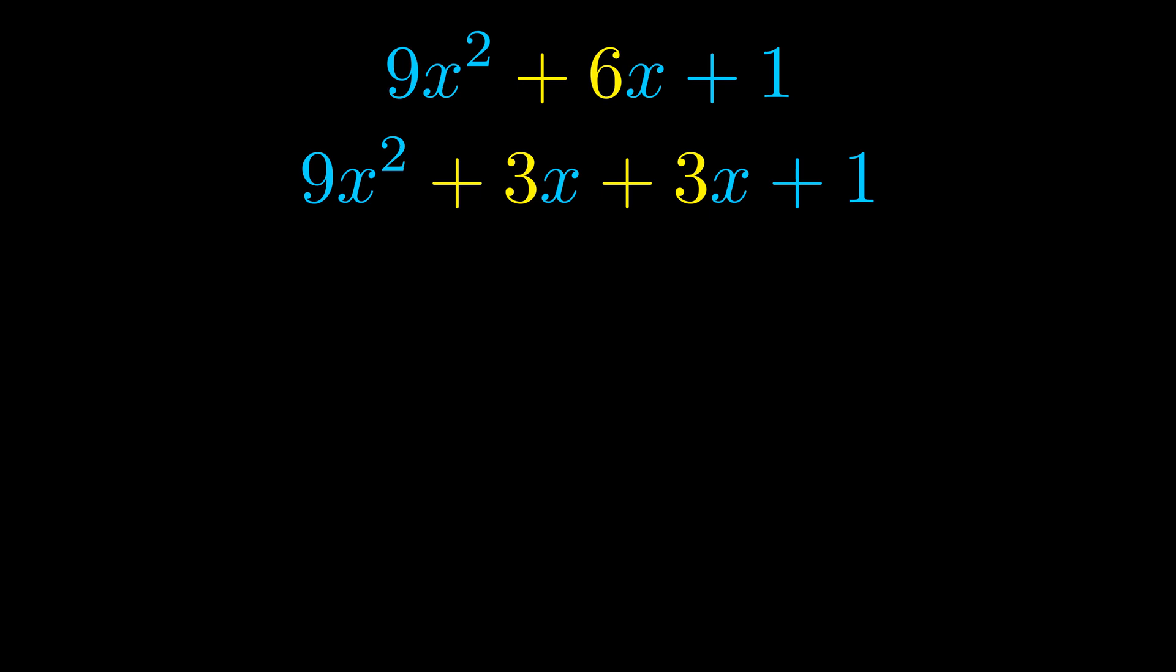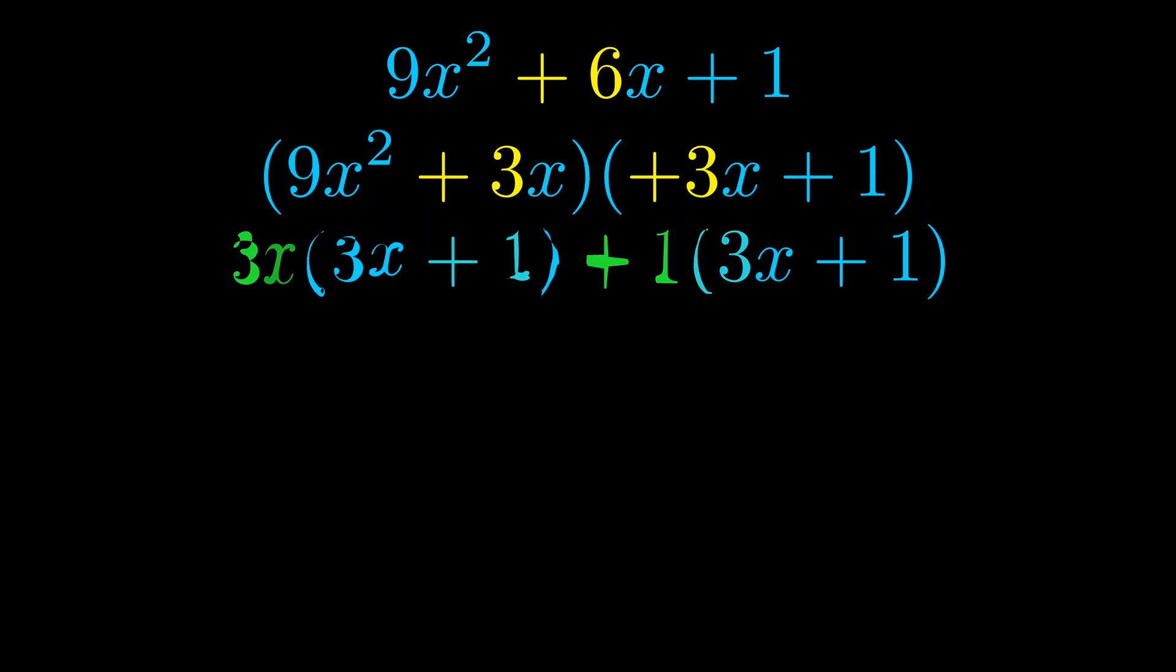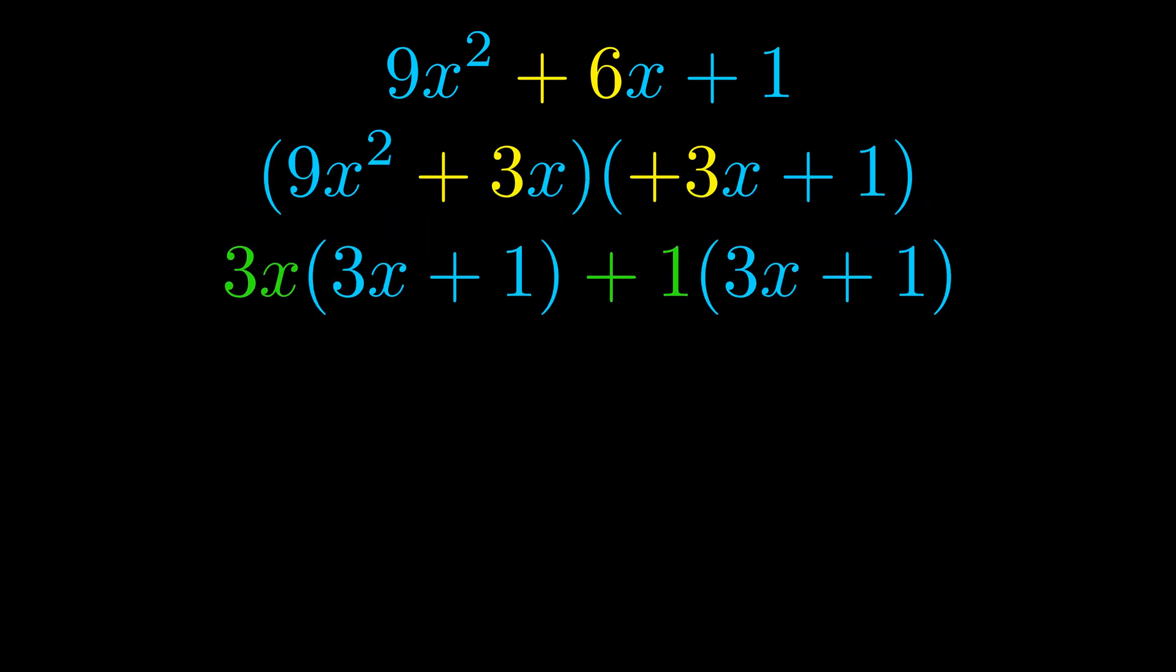Once we've done this we go ahead and we put parentheses around the first term and the last term. And we do that so that we can take the greatest common factor out of both terms. We can see the greatest common factor is now outside in green.